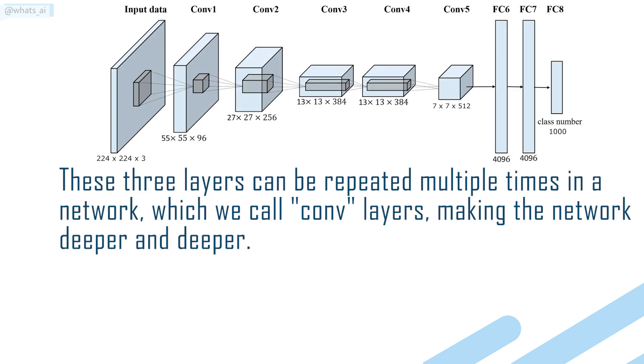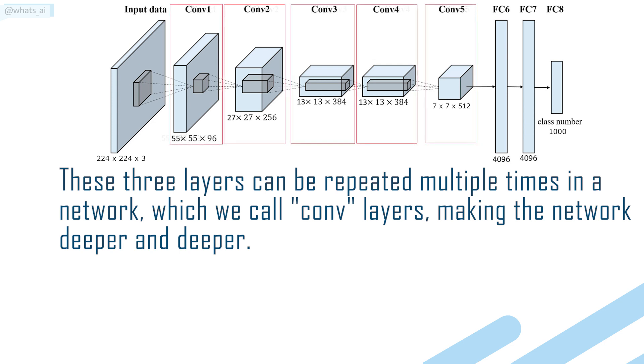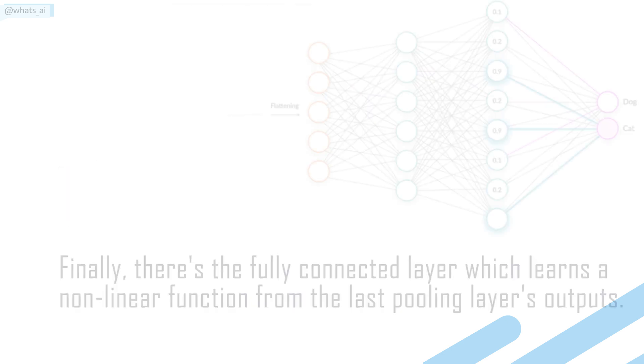These 3 layers can be repeated multiple times in a network, which we call conv layers, making the network deeper and deeper, which is where the term deep learning comes from.